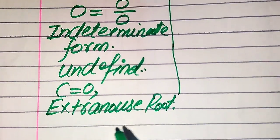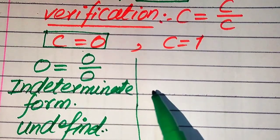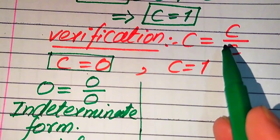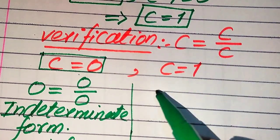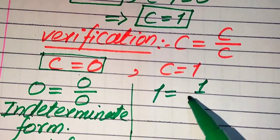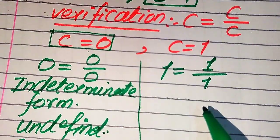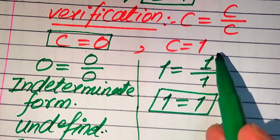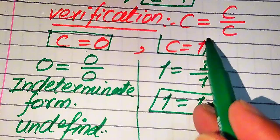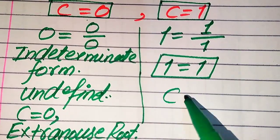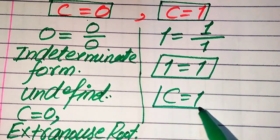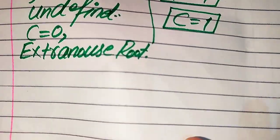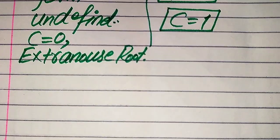Now we verify our second root. We put c equals 1 on both sides of the equation. After substituting, it becomes 1 equals 1 divided by 1, which gives 1 equals 1. Clearly, c equals 1 satisfies the given equation, so c equals 1 is the only solution of the given equation from the first method.